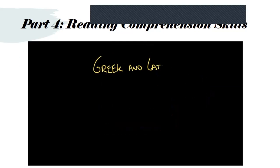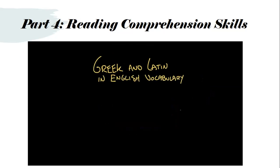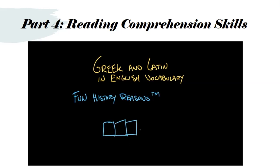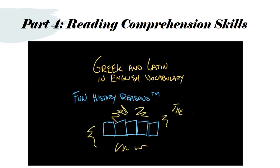Hello readers. Today I want to talk about vocabulary and how many English words have Greek or Latin roots embedded in them, and how you can use that to your advantage. English has Latin and Greek chunks in it for fun history reasons. Many complicated words are made up of little language building blocks that we can break apart using the power of understanding.